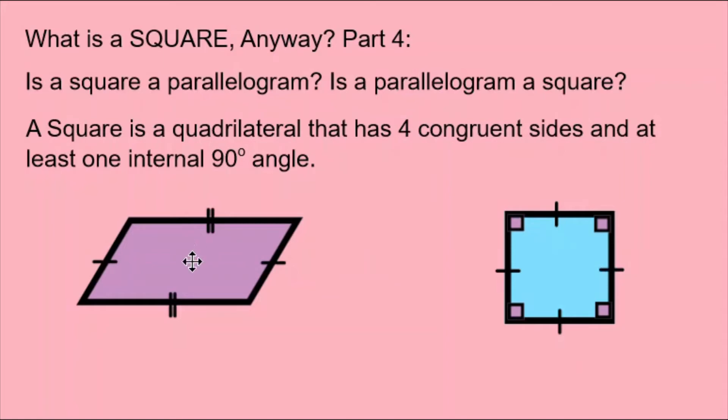But the parallelogram, the purple shape on the left, has two pairs of opposite congruent sides. But it does not necessarily have four congruent sides. And this one does not have any internal 90 degree angles. So a parallelogram does not necessarily have either four congruent sides or any internal 90 degree angles. So a parallelogram is not necessarily a square.